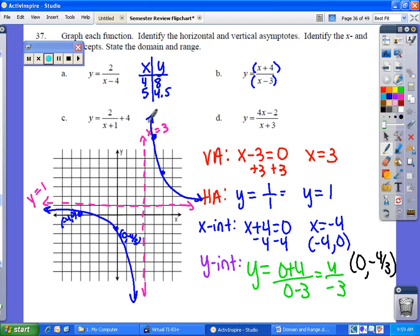Now the last thing is the domain. Domain goes from negative infinity to the vertical asymptote and vertical asymptote to infinity. The range goes from negative infinity to the horizontal asymptote and horizontal asymptote to infinity.